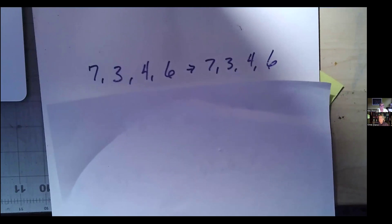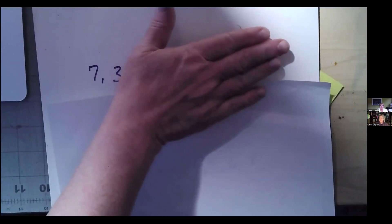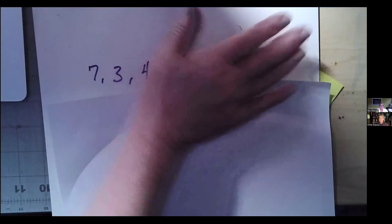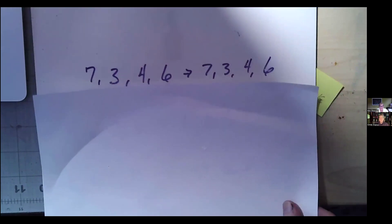The first one is digits forward. So I would say seven, three, four, six. And you would say? Seven, three, four, six. That's digits forward. I threw that one at you.